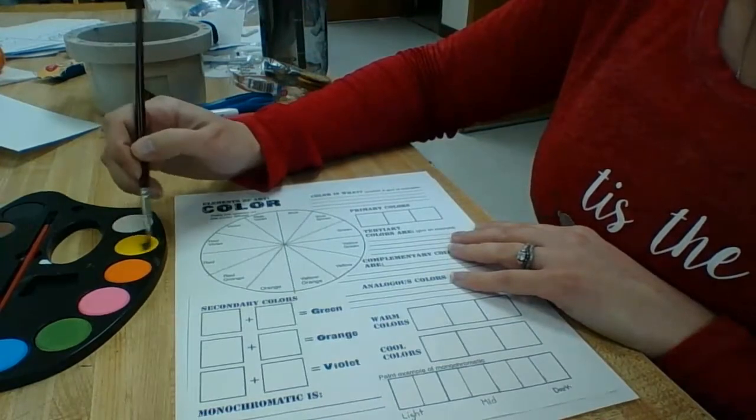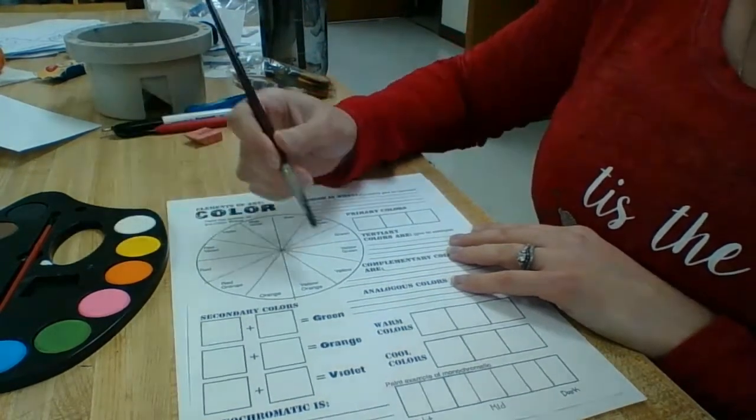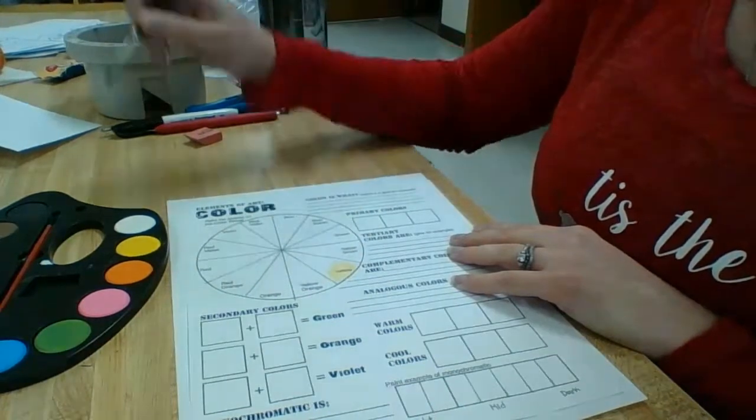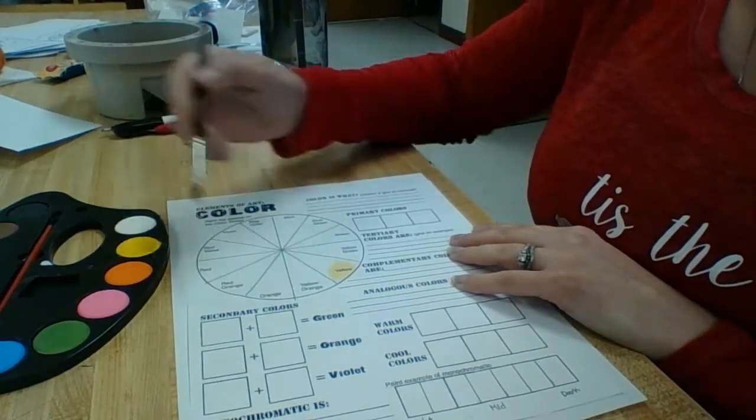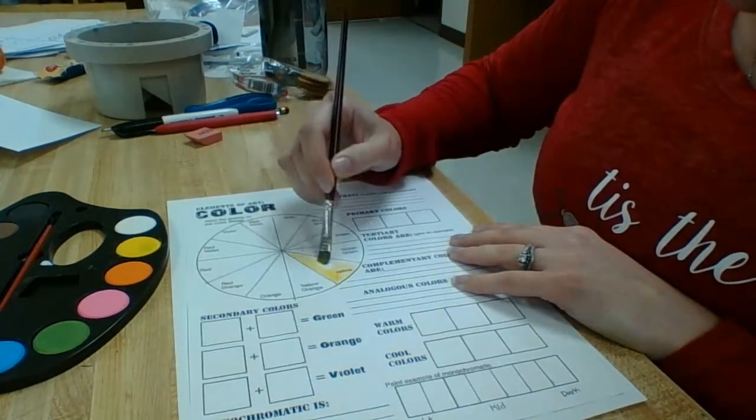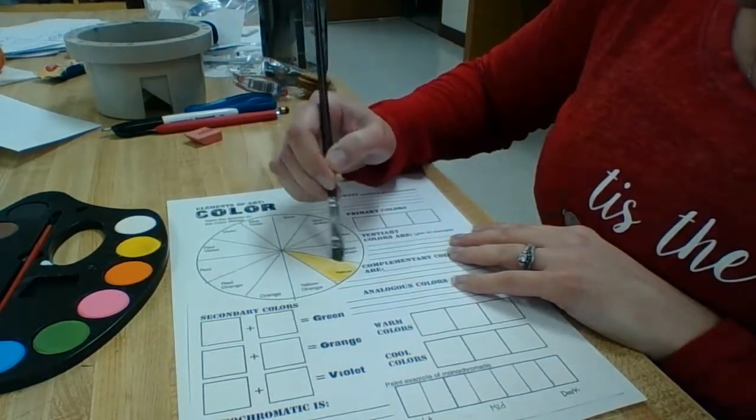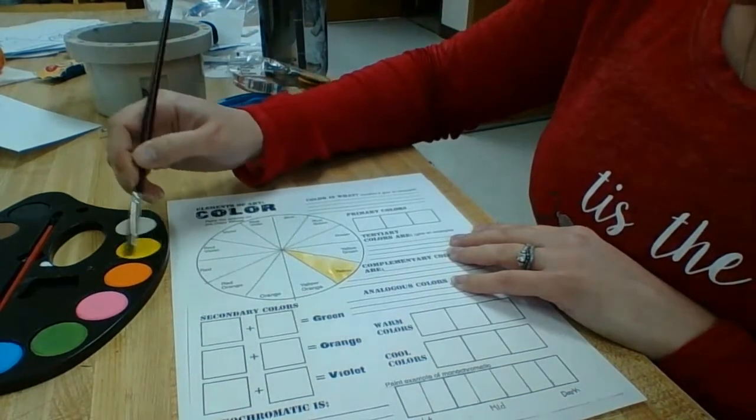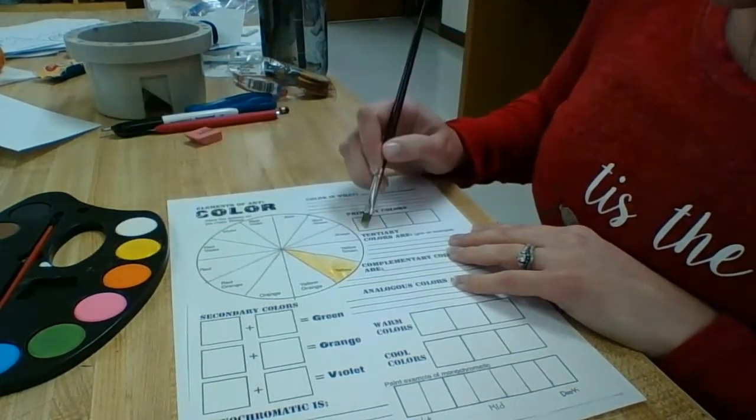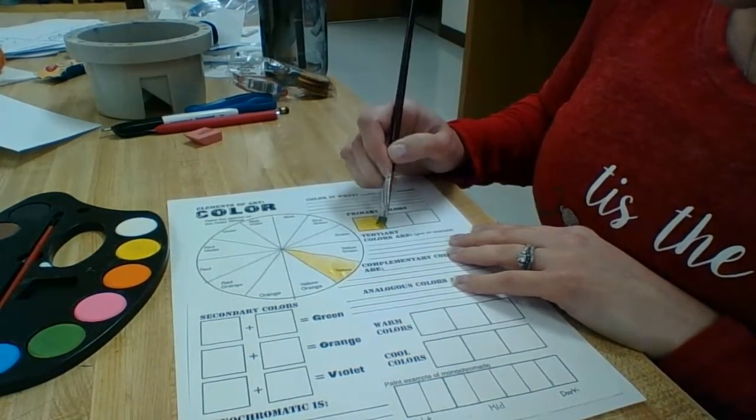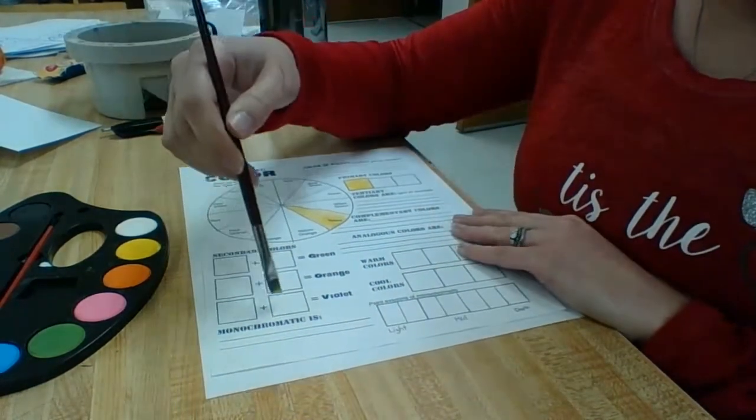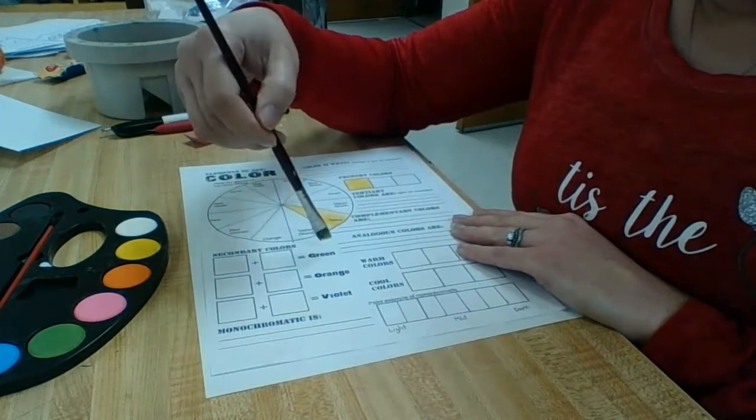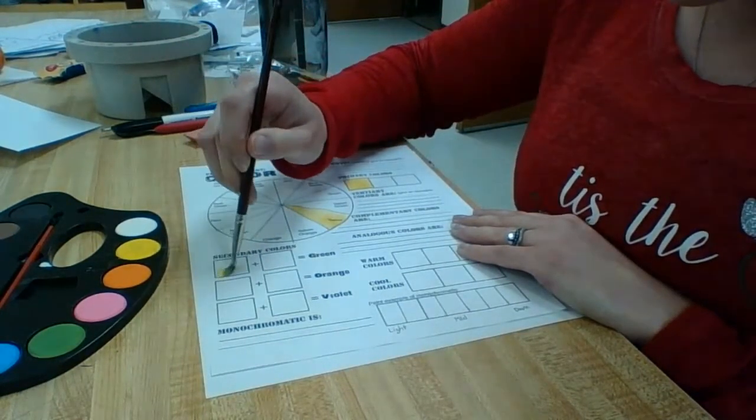Go in and fill in all of the areas that are easiest first. You obviously have regular yellow so you can go in and add your yellow where it needs to be. Primary is a yellow, or yellow is a primary color. If you look on these boxes here, to make green, you do need yellow.